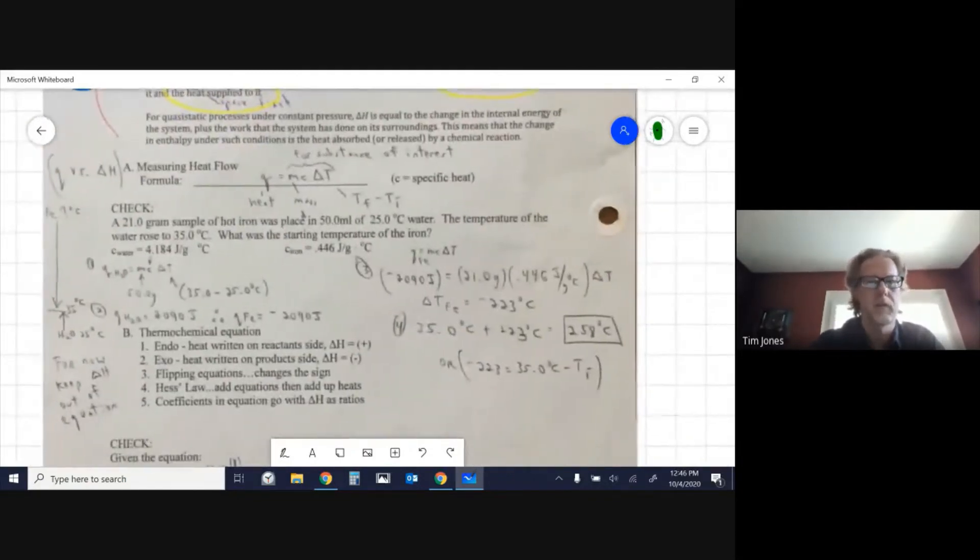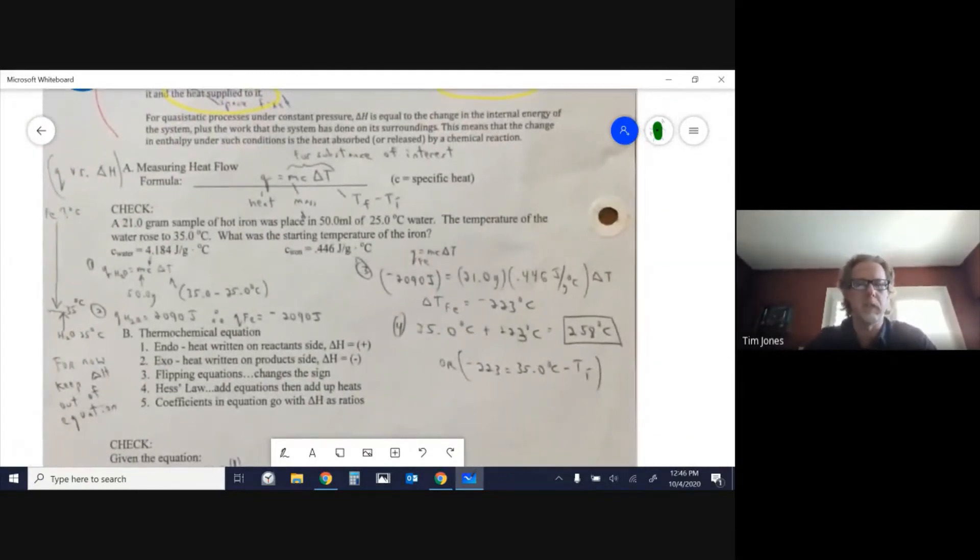The equation you learn in first year: q equals mc delta t. I call it q meat because it kind of looks like meat if you squint. The c is called specific heat or specific heat capacity.